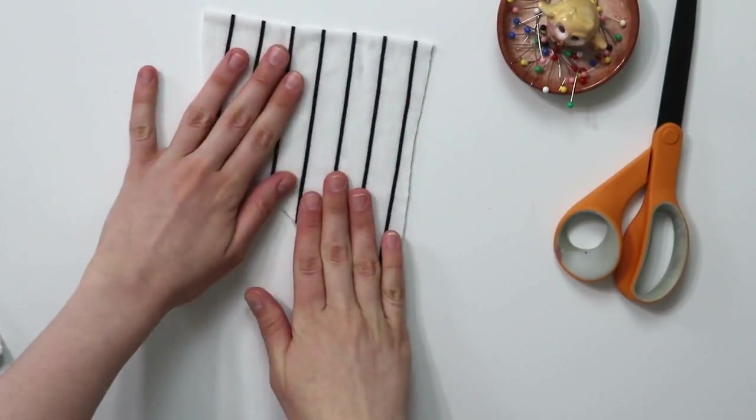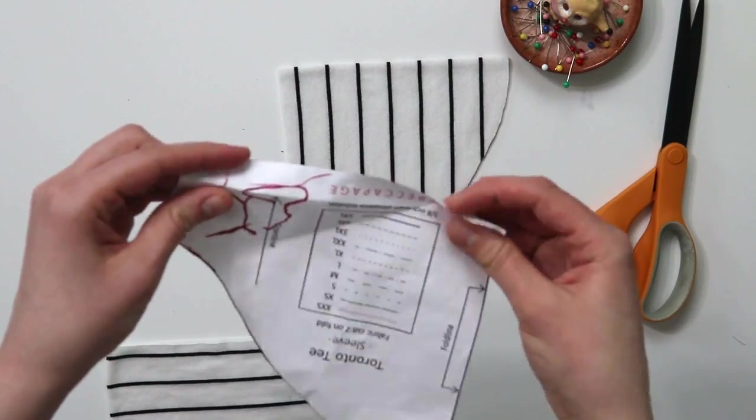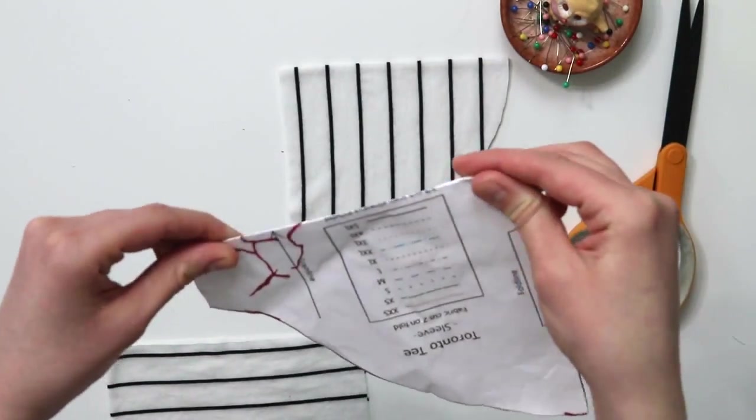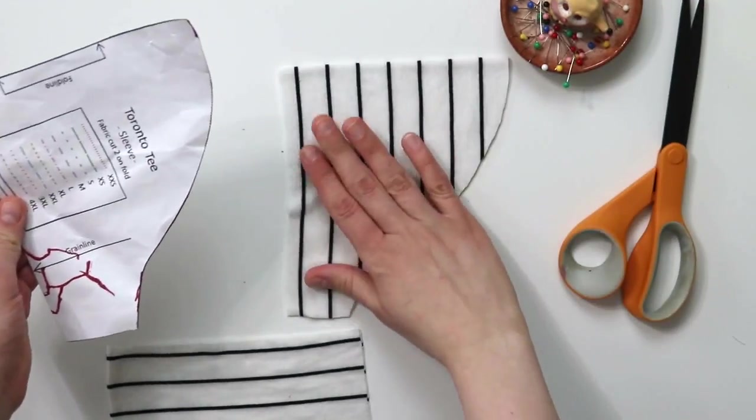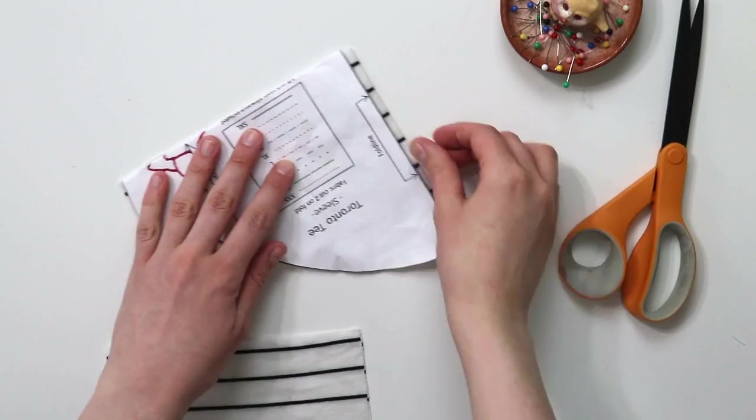The first thing you're going to do is start by cutting your pattern pieces. If your t-shirt sleeve features a built-in hem, just go ahead and fold it onto itself and cut your sleeve without that hem. You will see why in just a moment.